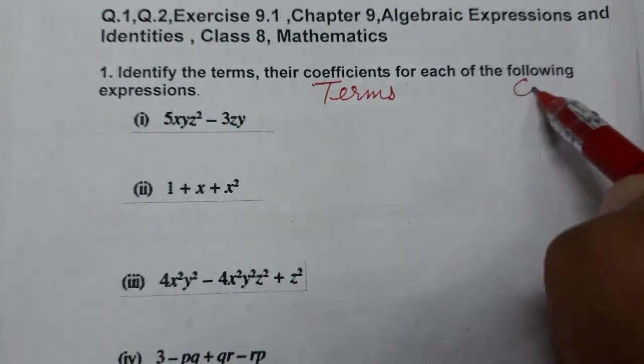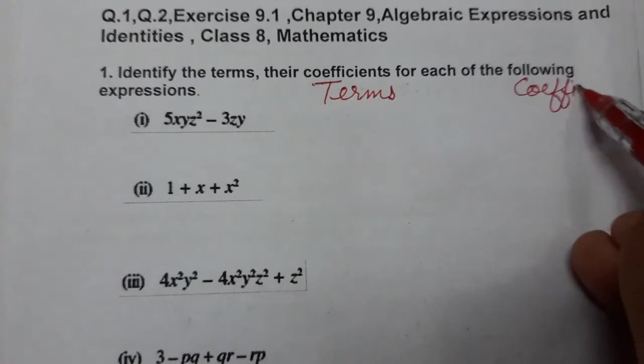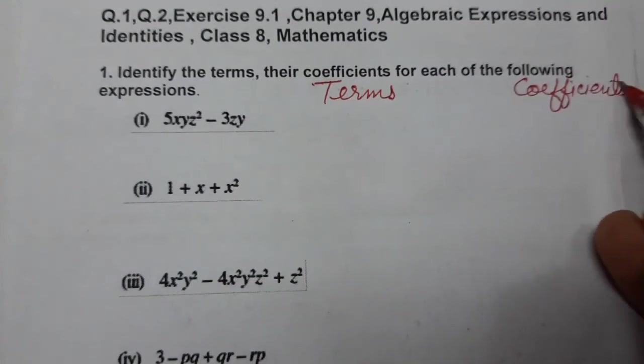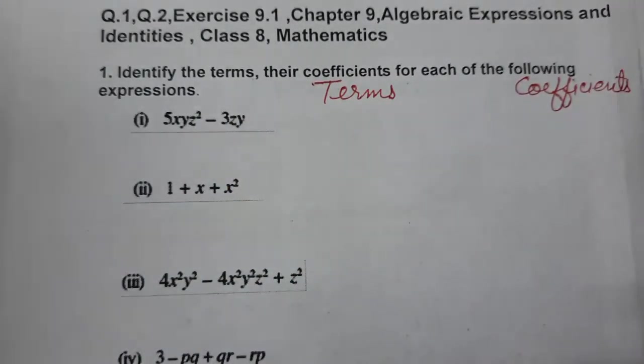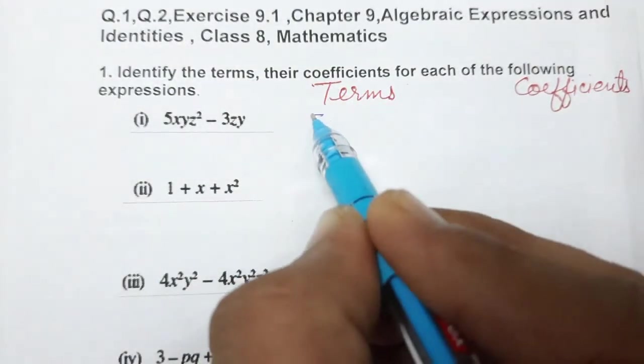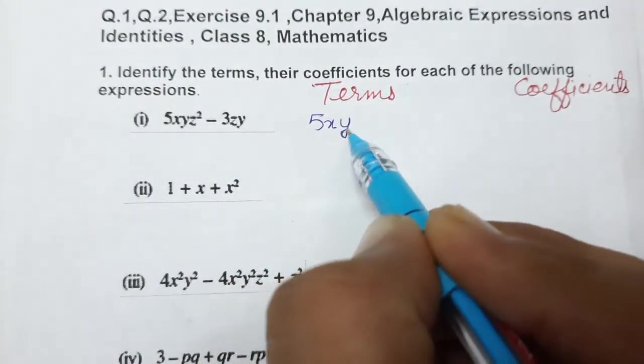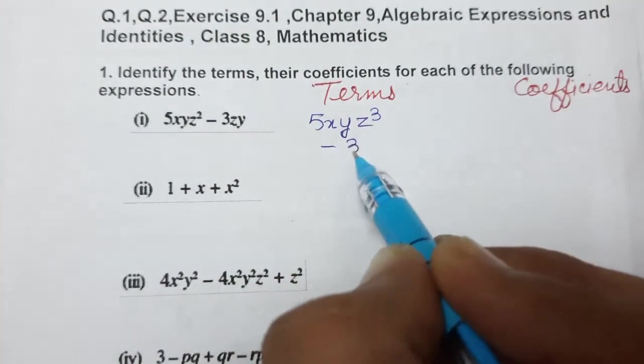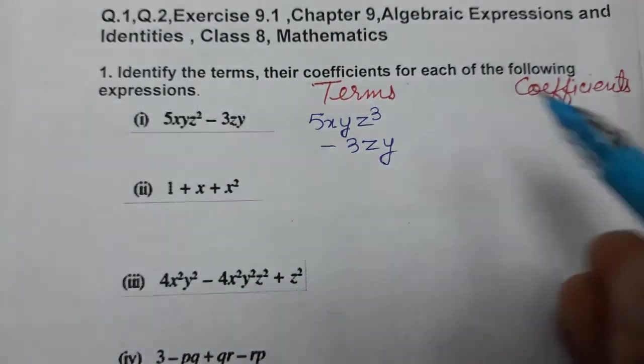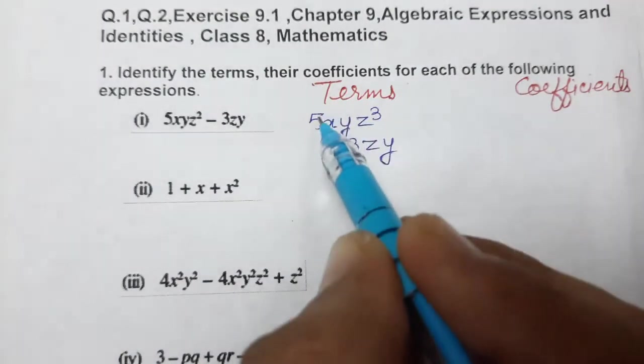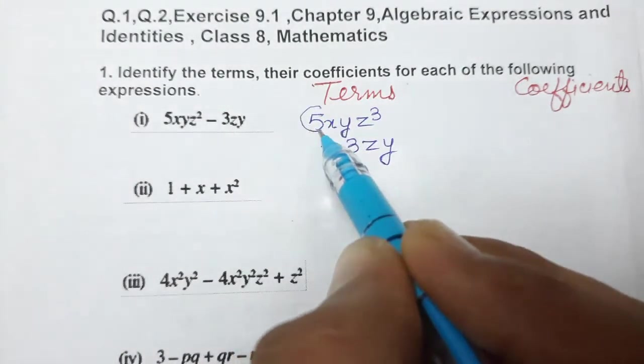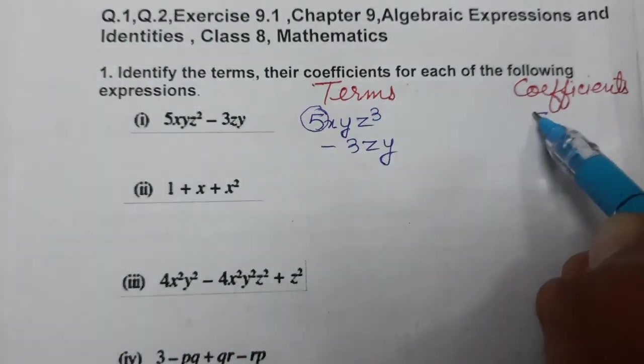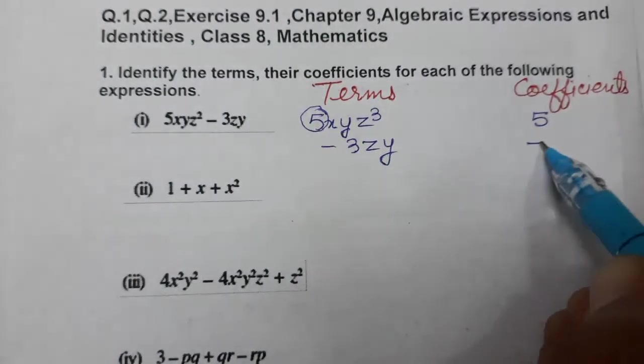So what are the terms? There are two terms in it: 5xyz³, this is the first term, and the second one is -3zy. And what is the coefficient? Coefficient means the number part attached to the variable. So 5 and here -3.